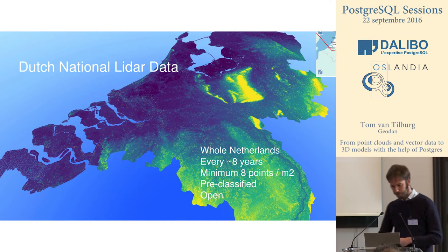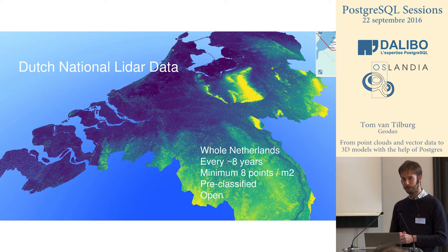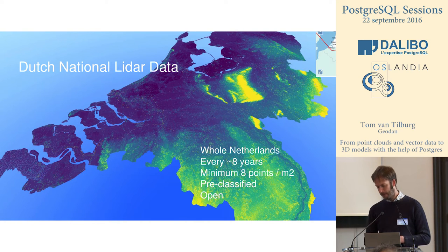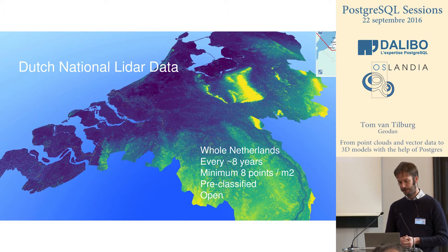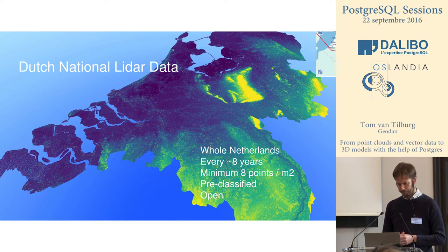Now the Dutch situation. What you see here are actually points — the very famous AHN2 viewer, which you can access online. You can play around and zoom in on the whole country down to building level. It is maintained every eight years; they're continuously flying an airplane in winter to scan the country, refreshed with a minimum of about eight — usually more — points per square meter. It's already classified when we get it, meaning ground points are separated from other objects like trees and houses. Most importantly, it's open data — everybody can access it.